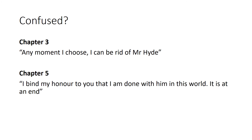If we think about him being confused, he seems at first a man who doesn't really know Hyde very well. He says in chapter 3, at any moment I choose I can be rid of Mr Hyde. And then in the extract in chapter 5, I bind my honour to you that I am done with him in this world. It is at an end — a statement of absolute certainty and surety. He seems confident he can be rid of Hyde at any time, but the later events of the novel reveal that this confidence was misguided and he was perhaps confused about his identity because he couldn't control it the way he felt he could.